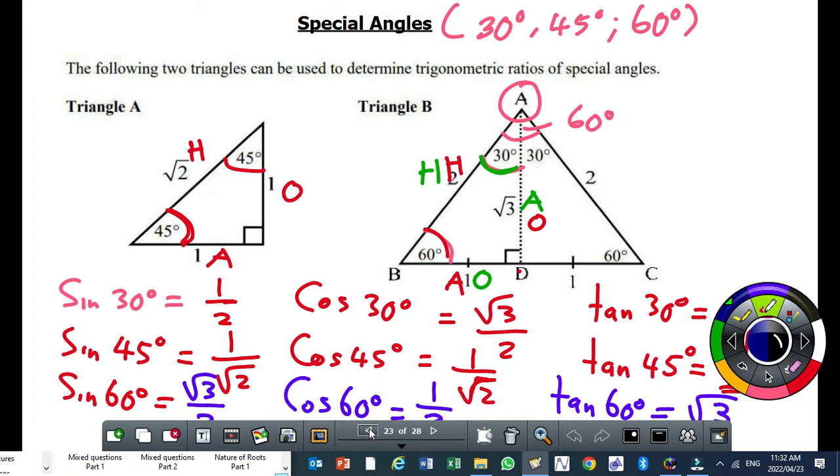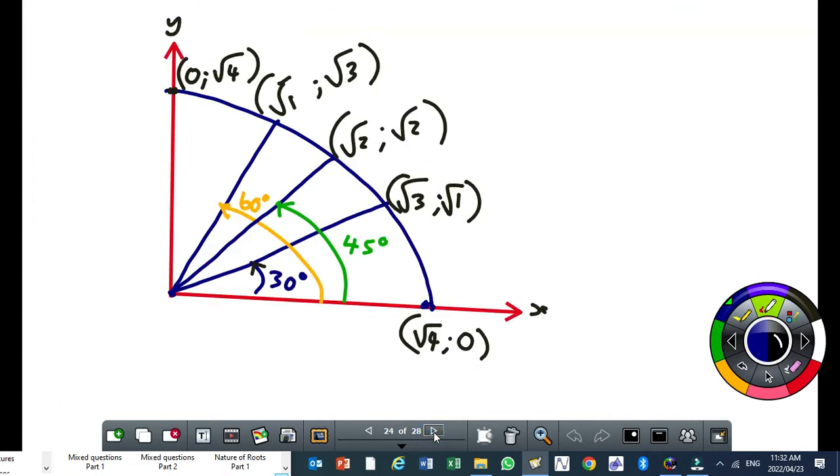Yesterday I used these two triangles to determine the ratios of the three trigonometric ratios for 30 degrees, 45 and 60 degrees. To make it easier for you to remember, you may need to memorize this diagram. The way you memorize it, this is the first quadrant.